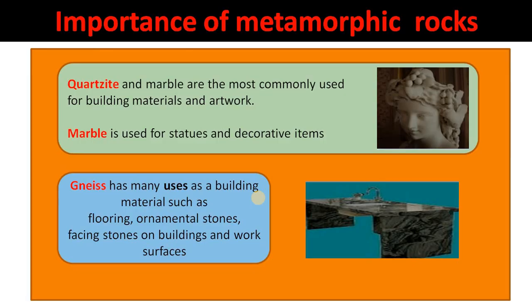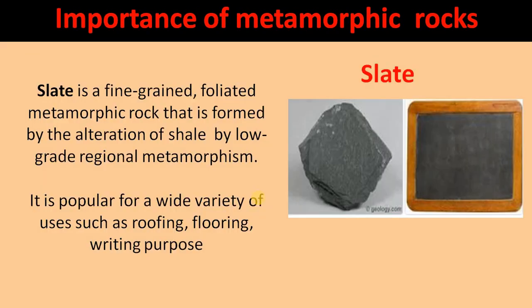Coming to the importance of metamorphic rocks: quartzite and marble are commonly used for building materials and artwork. Marble is also used for statues and decorative items, and even countertops are made from marble. Gneiss is used as a building material, for flooring purposes, as ornamental stone, facing stone, and for surface walls. Slate, another important metamorphic rock, is a very fine-grained, foliated metamorphic rock formed by the alteration of shale by low-grade metamorphism. It is used especially as a roofing material, flooring material, and also for writing purposes.